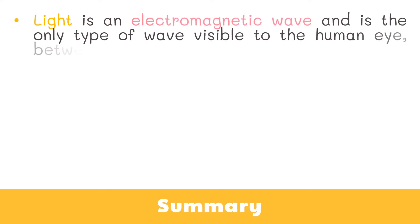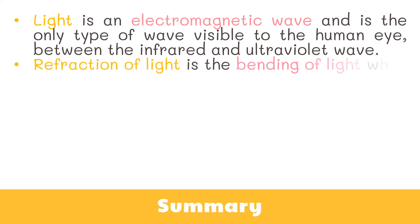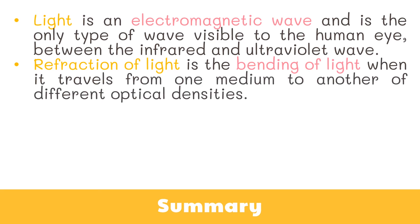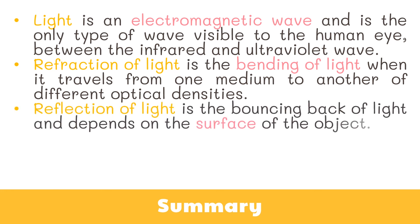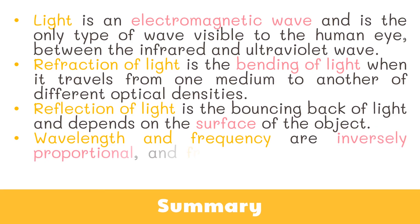So to summarize, light is an electromagnetic wave and is the only type of wave visible to the human eye, between the infrared and ultraviolet wave. Refraction of light is the bending of light when it travels from one medium to another of different optical densities. Reflection of light is the bouncing back of light and depends on the surface of the object. Wavelength and frequency are inversely proportional, and frequency and energy are directly proportional.